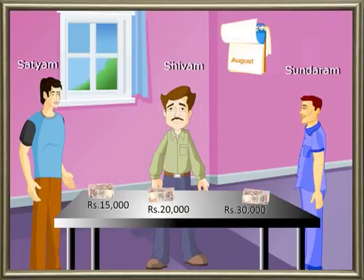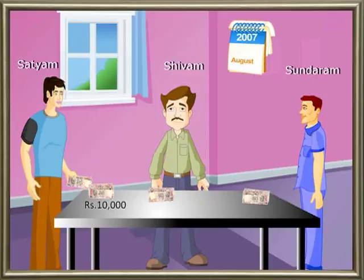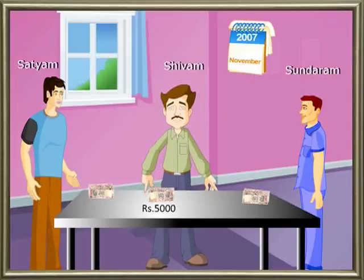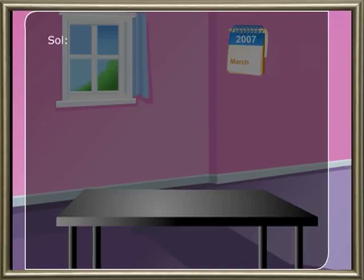Another example: Satyam, Shivam, and Sundaram started a business with investments of rupees 15,000, 20,000, and 30,000 respectively. After five months, Satyam withdrew rupees 10,000 from his investment. Three months later, Shivam withdrew rupees 5,000 from his investment. Then Sundaram added rupees 20,000 more to his investment. The profit at the end of the year is rupees 21,000. Find the share of each.